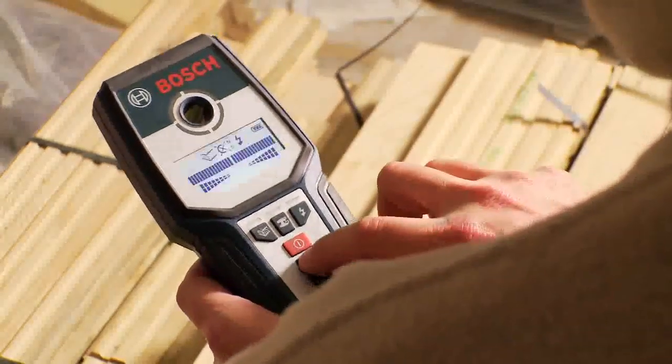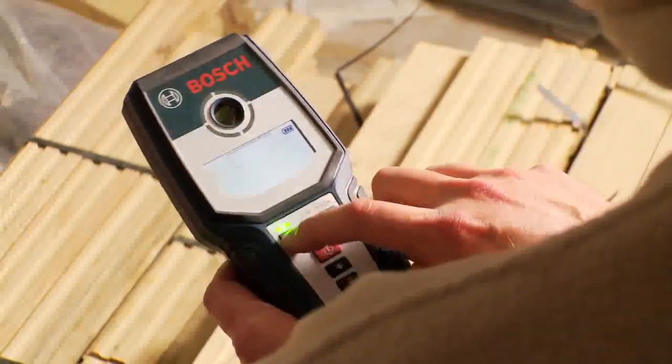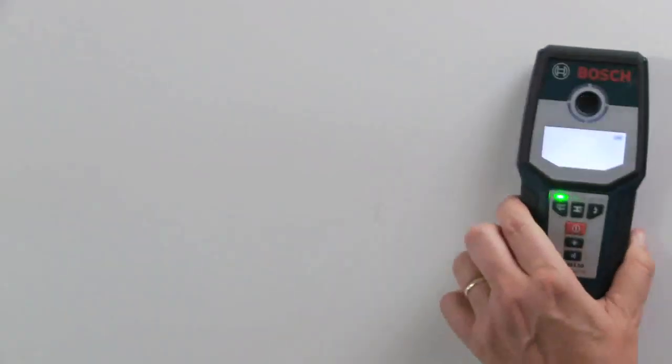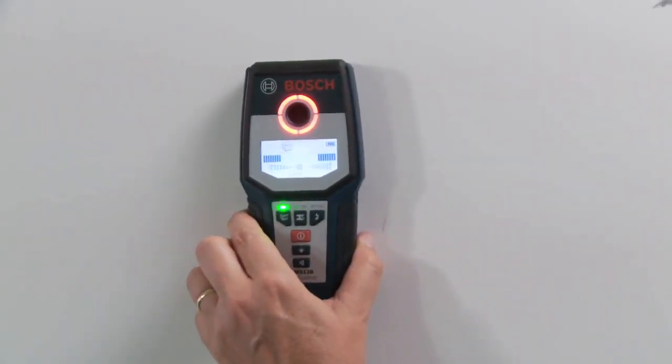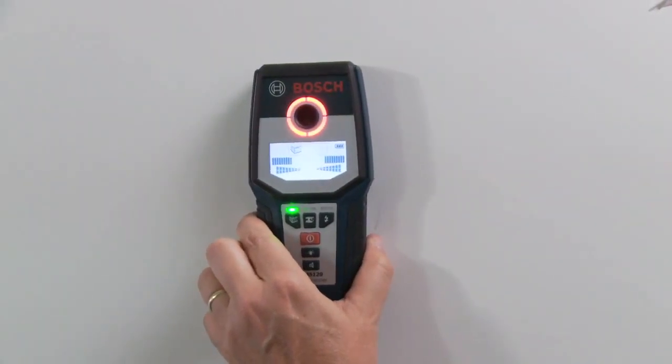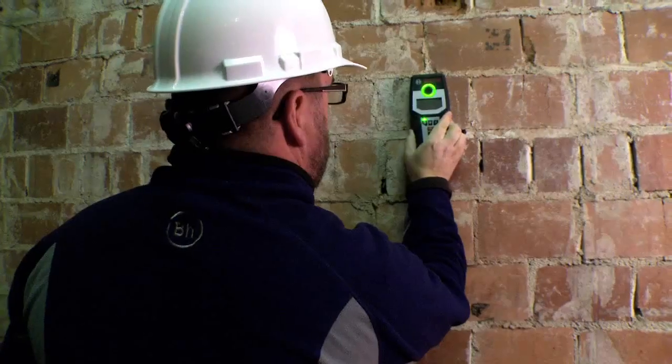The GMS-120 provides easy-to-view and understandable information. The large illumination ring changes color to green for no object found, orange for object near, red for object found within sensor range.